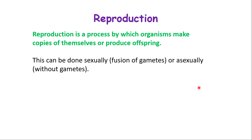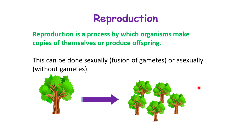Reproduction is the process by which organisms make copies of themselves or produce offspring. This can be done sexually, where gametes are fused, or asexually, without any involvement of gametes. All living things try to reproduce to ensure they do not go extinct. If an organism stops reproducing, it has a great chance of becoming extinct.